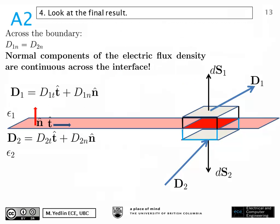From the previous slide, it's obvious that since D1N minus D2N equals zero, and the area element is positive, D1N is equal to D2N. We read that the normal components of the electric flux density are continuous across an interface.